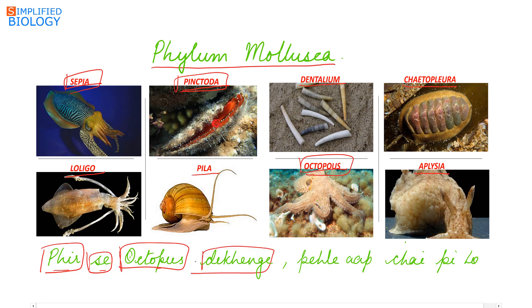'Dekhenge' - D is for Dentalium. 'Pehle aap' - A is for Aplysia. 'Chai' is for Chiton, P is for Pila, and Lo is for Lolligo. So again: Octopus dekhenge pehle aap chai pilo.